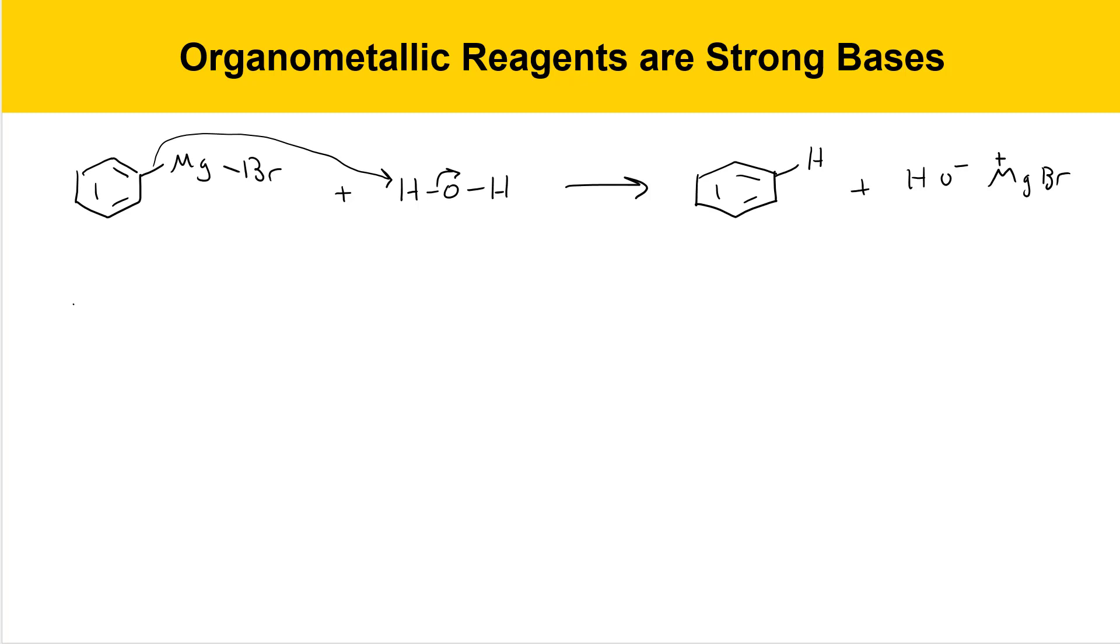In the next example, I'm going to show an organolithium reagent. In this case, this is butyllithium, a lithium with a butyl group attached. I'm going to show that reacting with an alcohol, which has an acidic proton. And here, the electrons in the lithium-carbon bond abstract a proton, electrons get pushed to oxygen, and the product is butane and a lithium alkoxide anion.